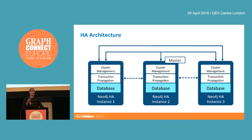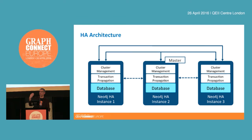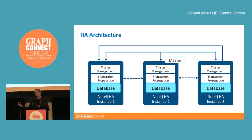Every machine in the cluster has a full copy of the data set — we don't distribute the data set across the cluster. If your application writes directly to the master, by the time control returns to the client, we've made that data durable on disk and it's immediately consistent for the client. However, the overall cluster is eventually consistent within the order of several milliseconds, as slaves poll the master to catch up. So there's a potential scenario where you write to the master, that transaction is propagated over several milliseconds, and if you're reading from a slave you may be reading some stale state.